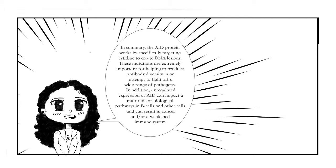In summary, the AID protein works by specifically targeting cytidine to create DNA lesions. These mutations are extremely important for helping to produce antibody diversity in an attempt to fight off a wide range of pathogens. In addition, unregulated expression of AID can impact a multitude of biological pathways in B-cells and other cells and can result in cancer and or a weakened immune system.